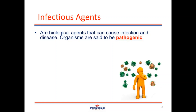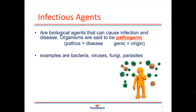Infectious agents are biological agents that can cause infection and disease. Organisms are said to be pathogenic, which means they are considered to be the origin of most diseases. The different types of infectious agents are bacteria, viruses, fungi and parasites.